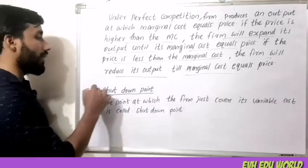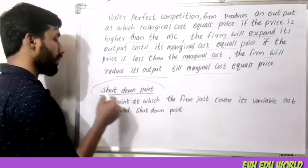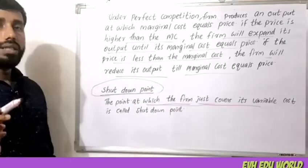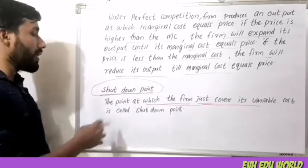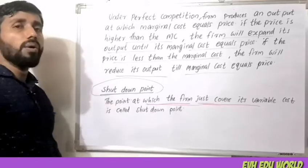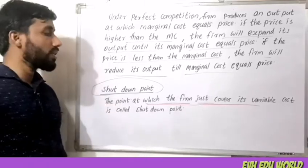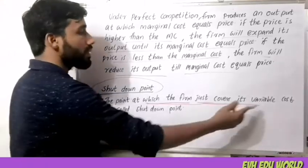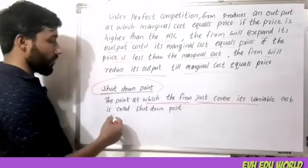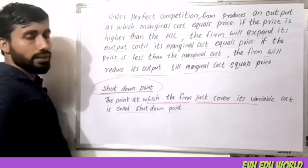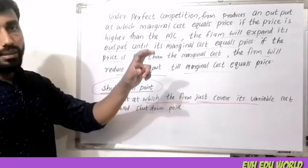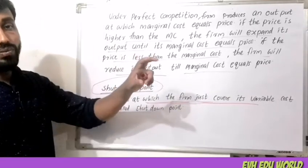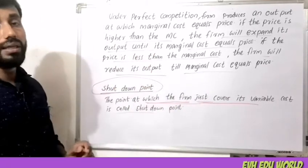Now, we call a shutdown point. The point at which the firm just covers its variable cost is called the shutdown point. We call it the average variable cost.